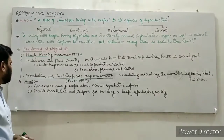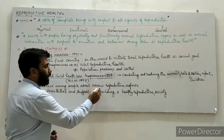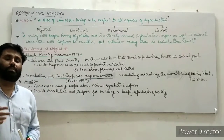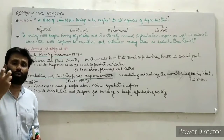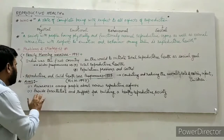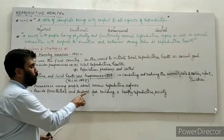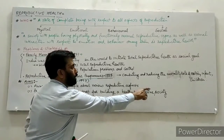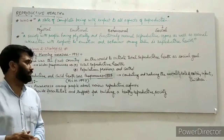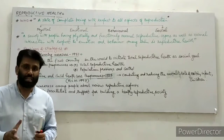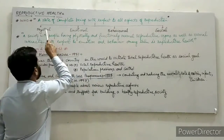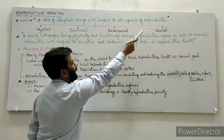The aims of both these programs were: first, creating awareness among people about various reproductive aspects — all the importance and goals of reproduction, and achieving awareness to meet those goals. Second, to provide facilities and support for building a healthy reproductive society — a society where everyone is reproductively healthy, with all four aspects: physical, emotional, behavioral, and social.